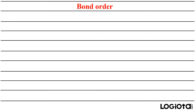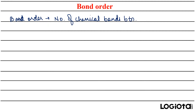In this video we'll be seeing how bond order can be calculated. Bond order is defined as the number of chemical bonds between two atoms. If we consider the N₂ molecule, the structure is N triple bond N, so the bond order is 3 because there are three bonds between the two nitrogen atoms.